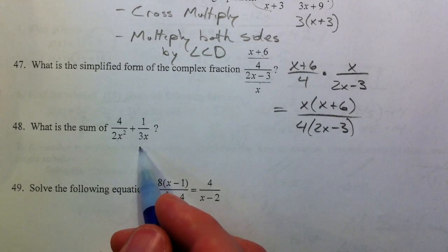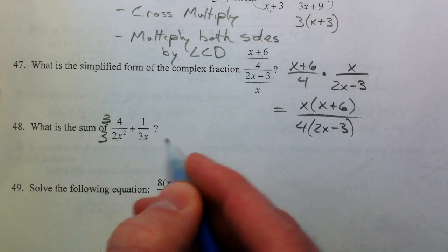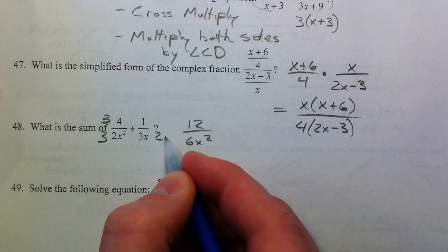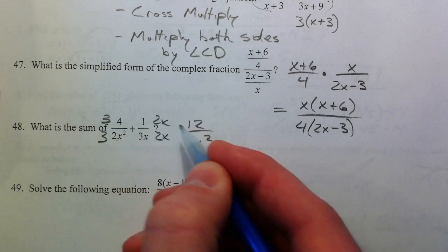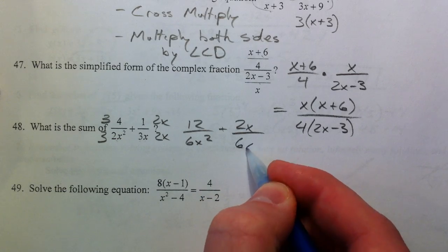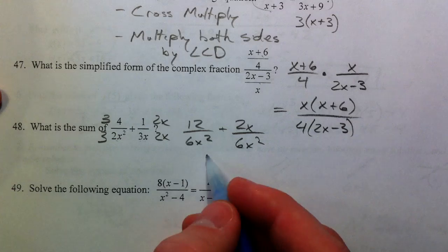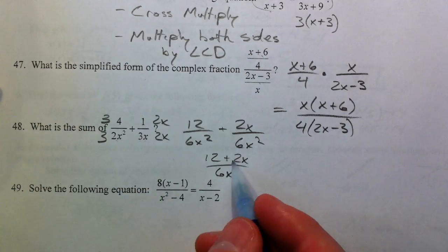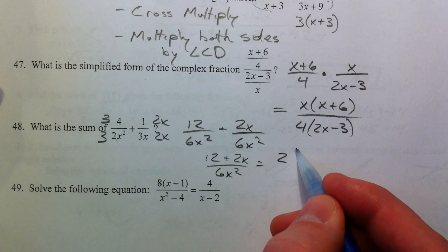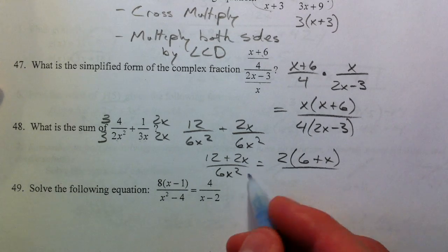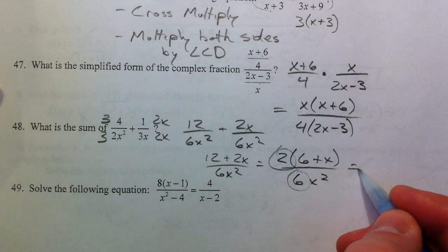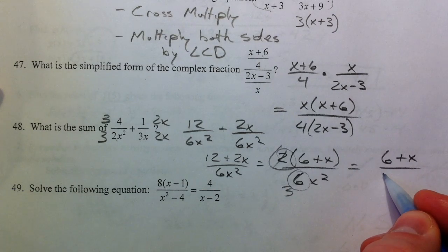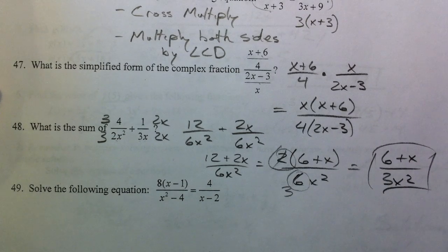48, 2X squared and 3X. And so we're going to need a 6X. So I'm going to multiply this one by 3 over 3 to get 12 over 6X squared. And this one needs a 2 and another X to get it to be X squared. So 2X. So add to that 2X over 6X squared. And so you get 12 plus 2X over 6X squared. Now, those have a common factor of 2 in them. So factor out the 2, you get 6 plus X, 6 over X squared. And the 6 and the 2 reduce to 6 plus X over 3X squared. One more problem to come.